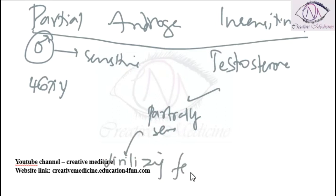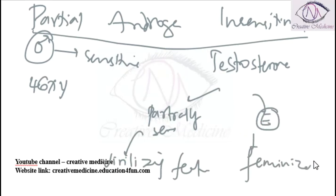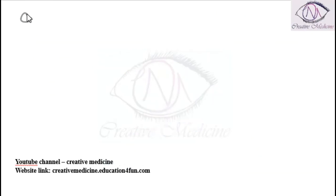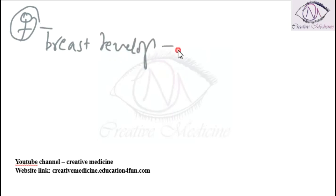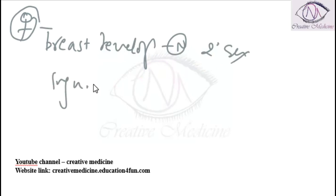Whereas estrogen is also properly sensitive. So as a result, the patient will develop female characteristics and there is proper breast development. So in Partial Androgen Insensitivity Syndrome, the female will have proper breast development — that is, secondary sexual characters are normal. Along with that, the patient will have inguinal hernia, clitoromegaly, and labial fusion, seen with primary amenorrhea.